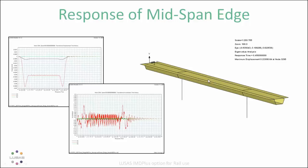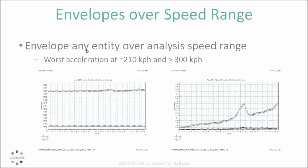As well as looking at single node responses, we can take a node and see how it behaves across a range of train speeds. Here we have displacement plots from 210 to 300 kilometers per hour — essentially flat — but for accelerations at about two-thirds of the speed range you can see a mode is excited, producing a dynamic response at a given speed. These graphs are automatically created, so you don't have to run individual models and build them manually — it's just part of the IMD Plus output.